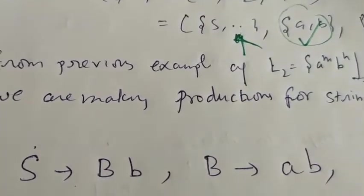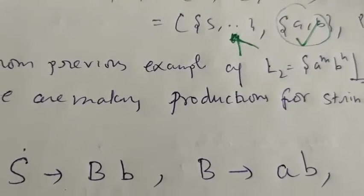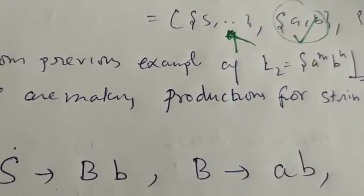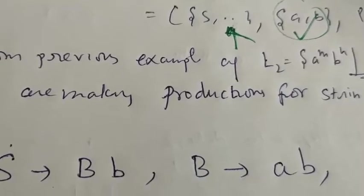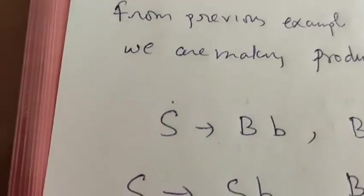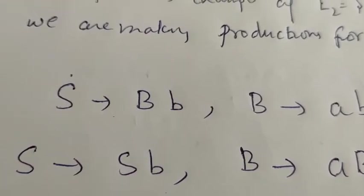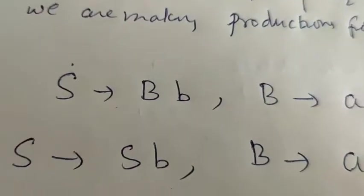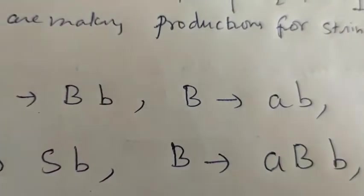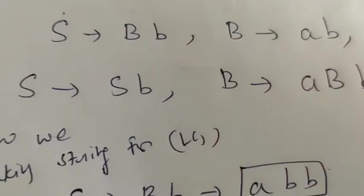S tends to capital B, small b and B tends to ab. So this will make our first string and this covers our two production. Now again for the other strings, S tends to Sb by recursion and B tends to ab and small b.